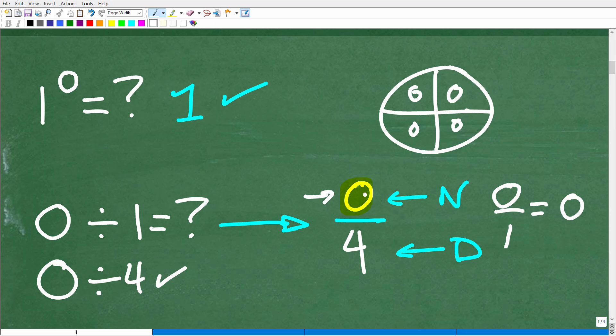So, again, this is where a lot of students get confused is when we have a zero in the numerator, that's one thing, okay? But when zero in the denominator, that's a whole different situation.